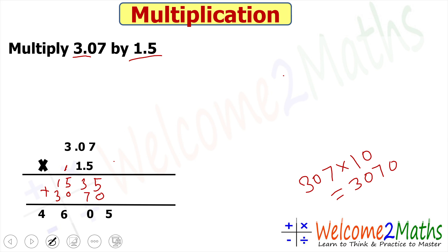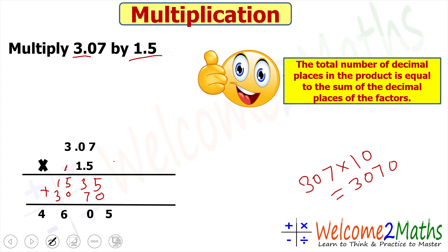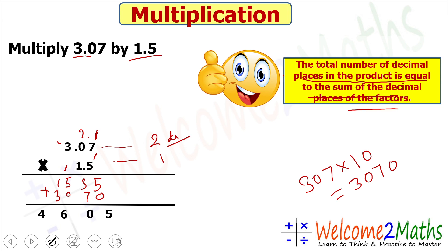Now we have to place the decimal point. The rule is: the total number of decimal places in the product equals the sum of the decimal places in the factors — the multiplicand and the multiplier. In 3.07 we have two decimal places (counting from the right: 1, 2). In 1.5 we have one decimal place.